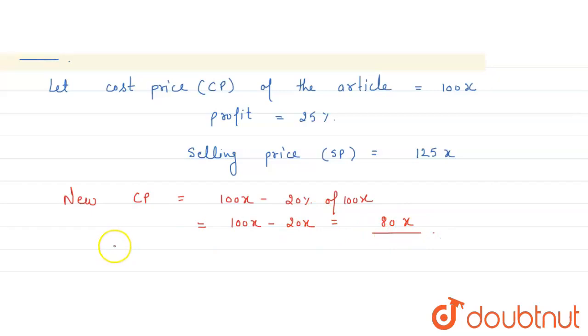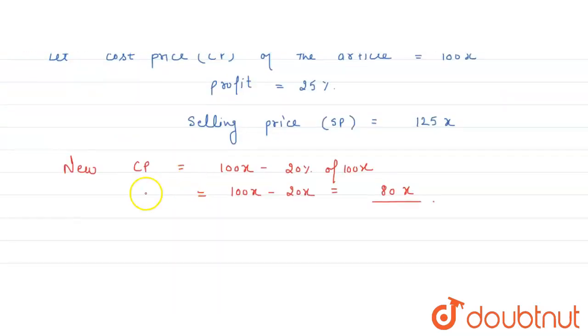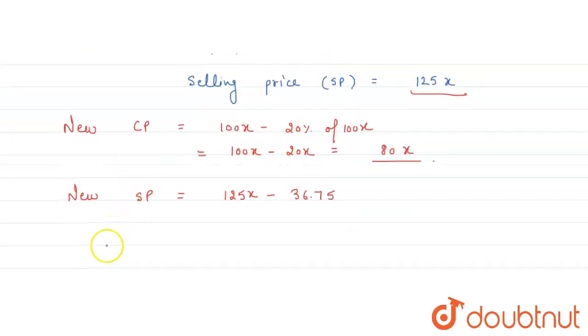Now what is new SP? He sold it for Rs. 36.75 less. So new SP is 125x minus 36.75. The gain percentage is 30%. So new gain percentage is equal to 30.